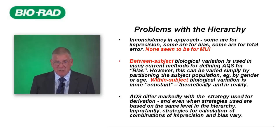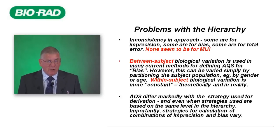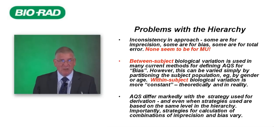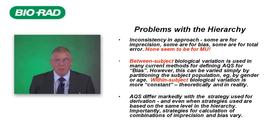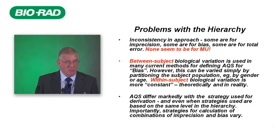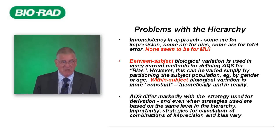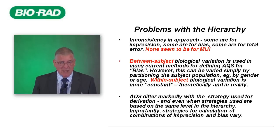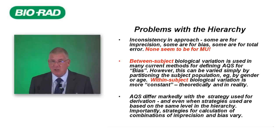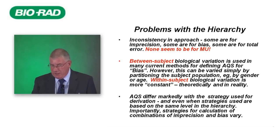Another problem is that analytical quality specifications differ markedly with the strategy used for derivation. Even when the strategy is at the same level in the hierarchy, you can get quite different analytical quality specifications depending upon how you use the strategy. Very importantly, strategies for calculation of combinations of imprecision and bias — i.e. total error — vary significantly.